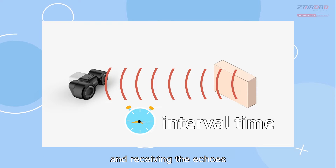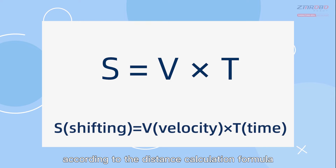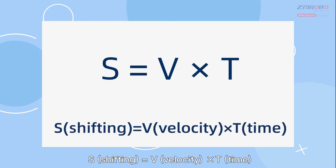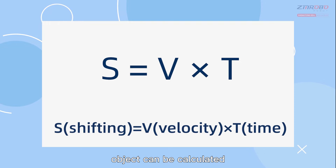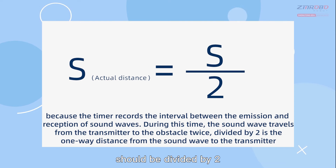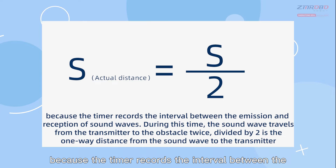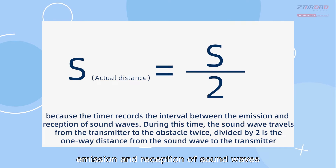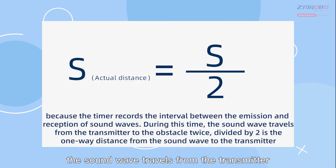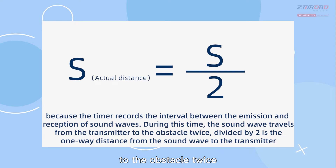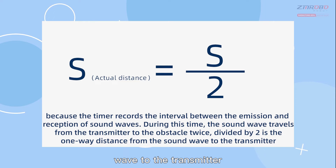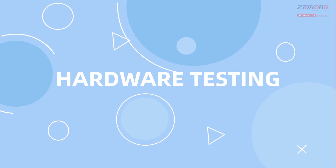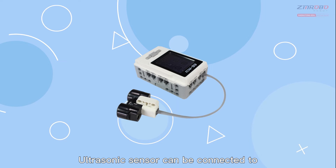The built-in timer records the interval time between the transmitter sending out the acoustic waves and receiving the echoes. According to the distance calculation formula s (distance) = v (velocity) × t (time), the distance from the sensor to the target object can be calculated. Note that the result should be divided by 2, because the sound wave travels from the transmitter to the obstacle and back — divided by 2 gives the one-way distance.